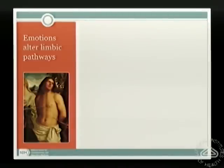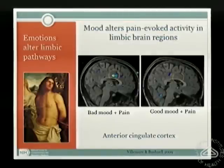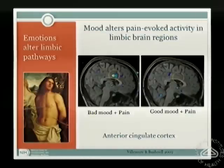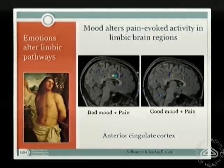Emotions alter the unpleasantness dimension of pain, and consistent with that, the most profound modulation we see is in the anterior cingulate cortex — an area known from other studies to be involved in the emotional aspects of pain processing. You get a strong activation when the person is given pain in a bad mood, and it no longer even reaches statistical threshold when the person is in a good mood given the same pain. The physical stimulus is the same, the emotional state is different, and you get a very different activation pattern in the brain.